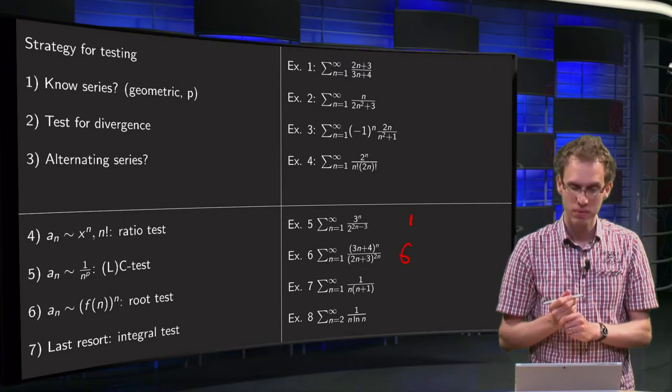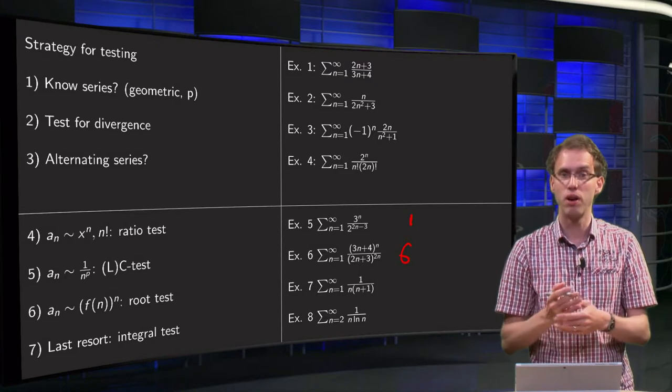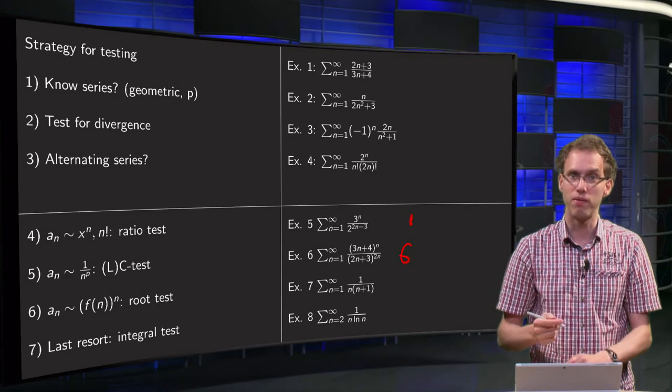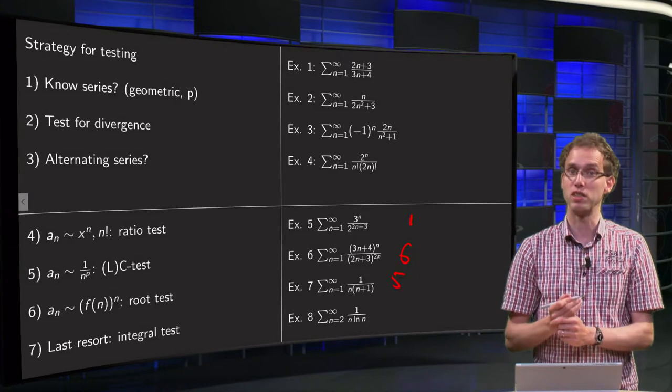And then 7, you see terms tend to 0, it is not alternating and not known, but the terms behave like 1 over n squared, so here typically limit comparison test or comparison test would be fine.